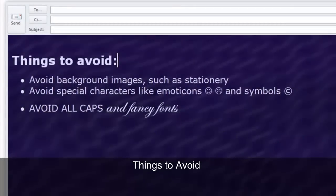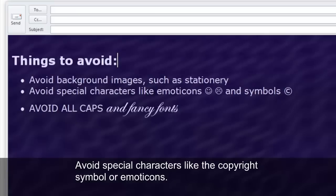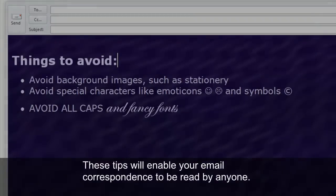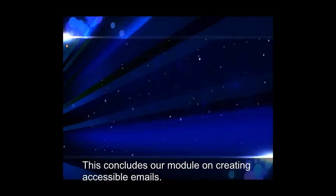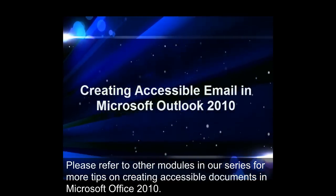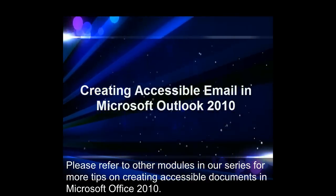Things to avoid: avoid background images such as stationery, which can make your text less readable. Avoid special characters like the copyright symbol or emoticons. Avoid all caps and fancy fonts such as cursive or graphic signature blocks, which are hard to read. Following these tips will enable your email correspondence to be read by anyone. This concludes our module on creating accessible emails — please refer to other modules in our series for more tips on creating accessible documents in Microsoft Office 2010.